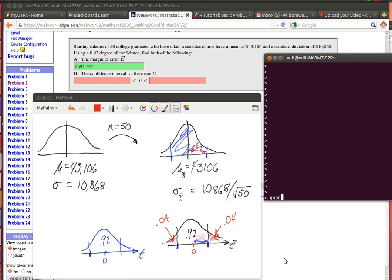It's just the qnorm, because of 0.96 in a mean equal to 0 and a standard deviation equal to 1. Now that's telling me this distance right here in the Z coordinate. So when I want to find the E up here, that's telling me the number of standard deviations away that I need to be. So what I need to have is that number of standard deviations times the standard deviation, 10.868 divided by the square root of 50.